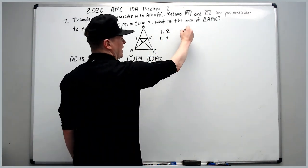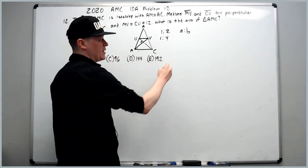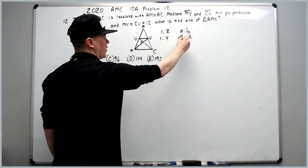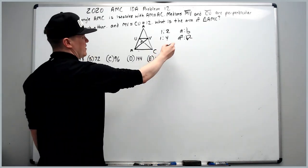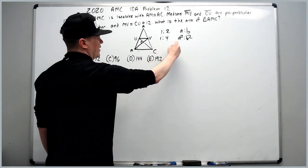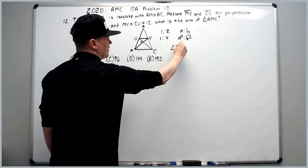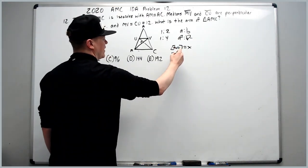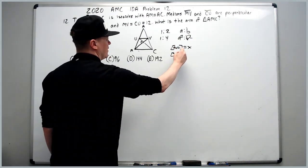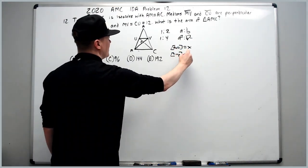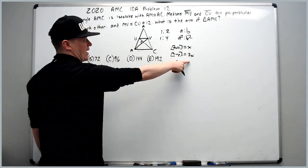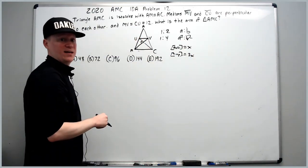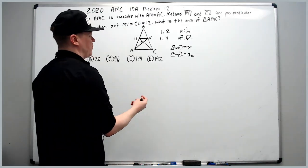All lengths in similar shapes are A to B and all areas are A squared to B squared. We can say the area of triangle AUV equals X, and the area of the trapezoid equals 3X, because X plus 3X is 4X for the whole triangle AMC.